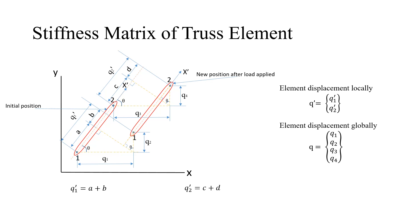Using the larger triangle for node 1, cos theta equals adjacent over hypotenuse, which is a divided by q1, so a equals q1 cos theta. Similarly, using the smaller right-angle triangle, sin theta equals opposite over hypotenuse, which is b divided by q2, so b equals q2 sin theta. Therefore, q1 dash equals q1 cos theta plus q2 sin theta. In a similar fashion for node 2, q2 dash equals q3 cos theta plus q4 sin theta. Let this be equation 1.